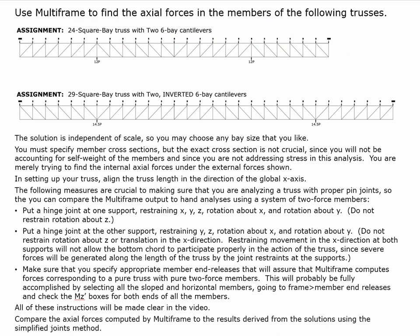These are the truss configurations. In this case, we have a total of 24 square bays, a six-bay cantilever on each end, and the long diagonals are oriented in a manner that's going to produce tension in those diagonals. We're also going to look at the 29 square bay truss with two inverted six-bay trusses — basically the 29-bay version as if we've inverted all of the webs — so we end up with compression in the diagonals and tension in the vertical web members.